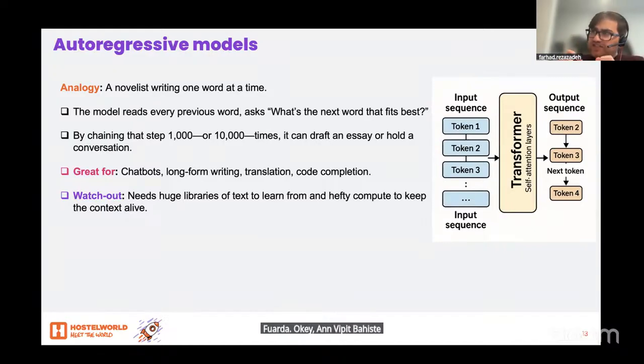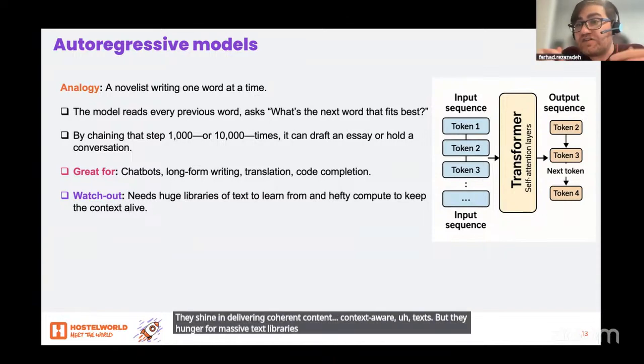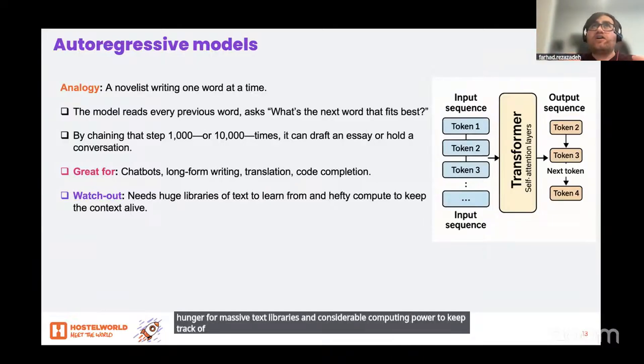By stringing together thousands of these 'what comes next' decisions, the model can draft essays, carry on a chat, or even translate languages. They shine in delivering coherent, context-aware text, but they hunger for massive text libraries and considerable computing power to keep track of long conversations.